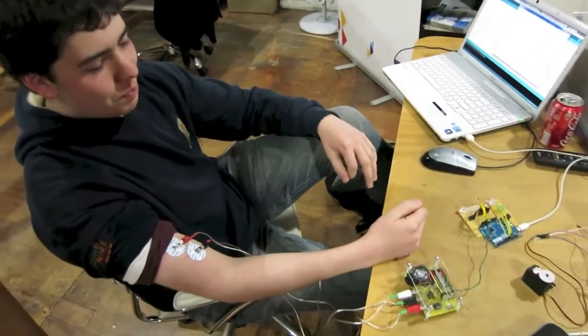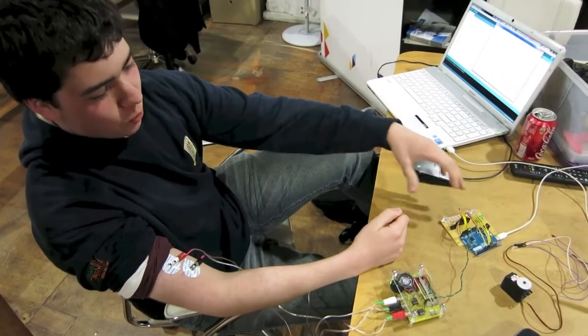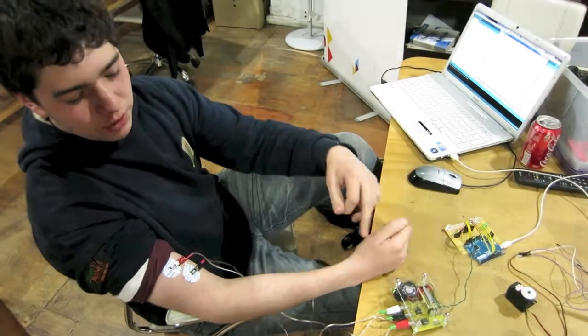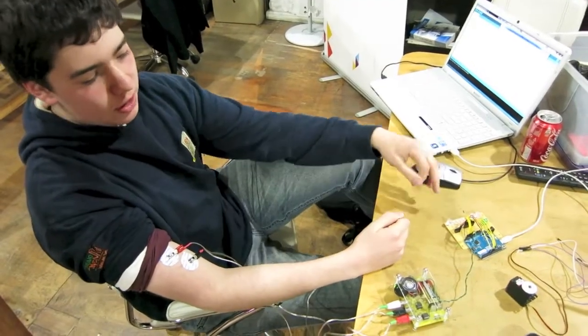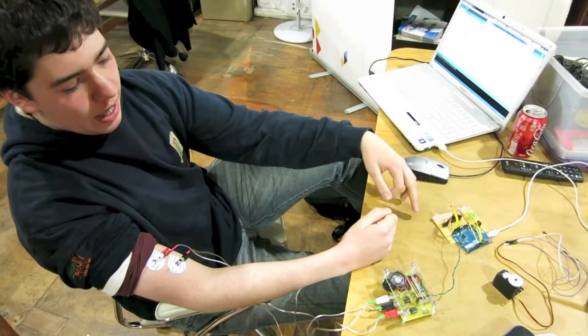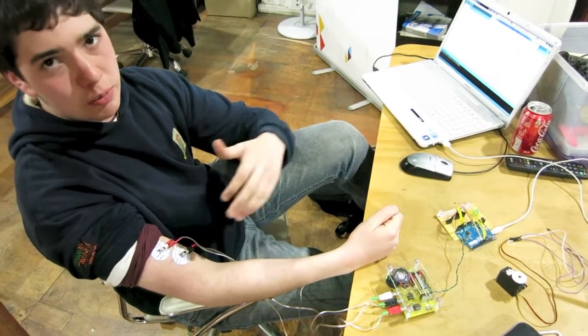Alright, so what have you invented here? It's basically an array of LEDs which takes the input from my muscles through the spiker box, reads in an analog value, and shows it proportional to my strength.